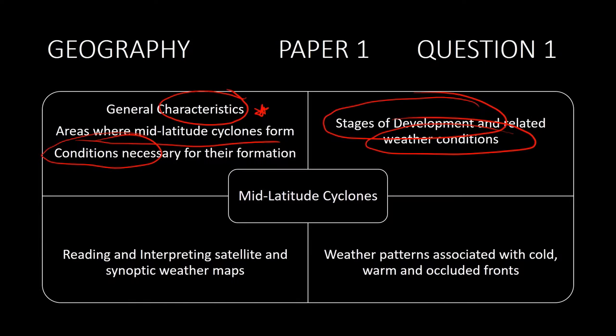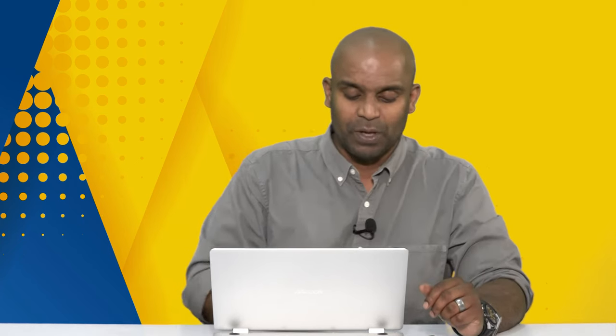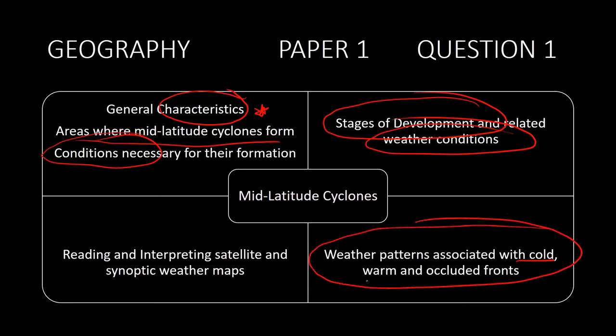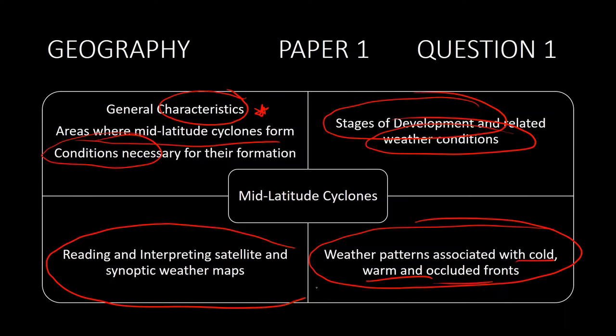Related weather conditions are important — depending on the type of cloud associated with the stage of development, that will determine the type of weather associated. When you see cumulonimbus clouds, you should be preparing for torrential rainfall as well as gale force winds. The weather patterns associated with the cold, warm, and occluded fronts — there are various cloud formations associated with each type of front. Knowing the difference between the cold and warm fronts, which sectors are occurring during each stage, and the difference between a warm occlusion and a cold occlusion will help you better prepare. Reading and interpreting satellite images as well as synoptic weather maps is crucial.